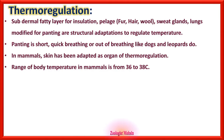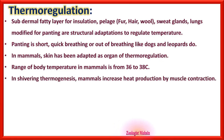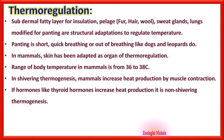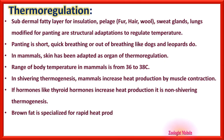The range of body temperature in mammals is from 36 to 38 degrees centigrade. In shivering thermogenesis, mammals increase heat production by muscle contraction. In non-shivering thermogenesis, hormones like thyroid hormones directly increase heat production. Brown fat is a specialized fat for rapid heat production in some mammals.